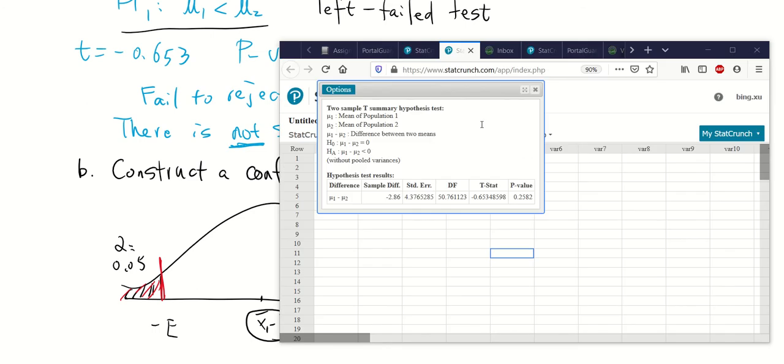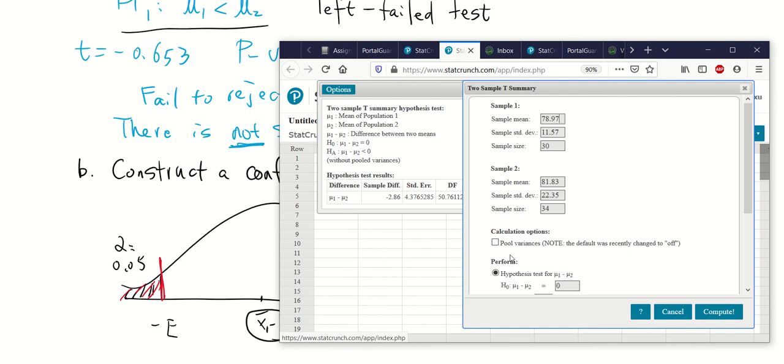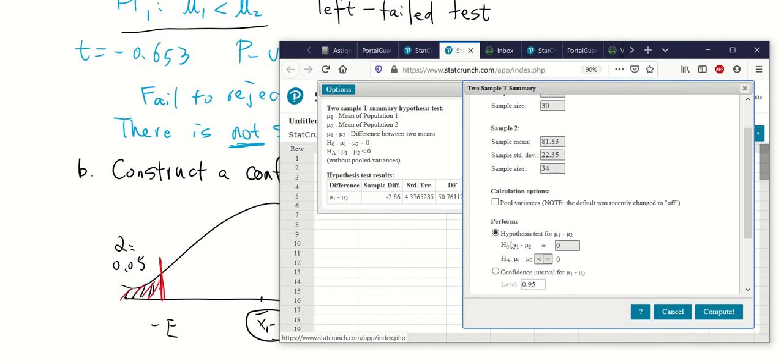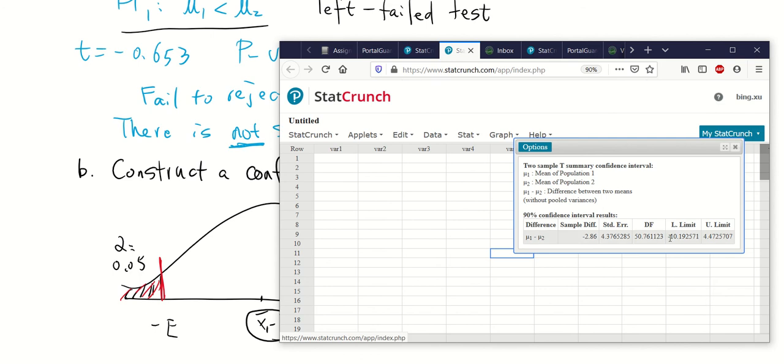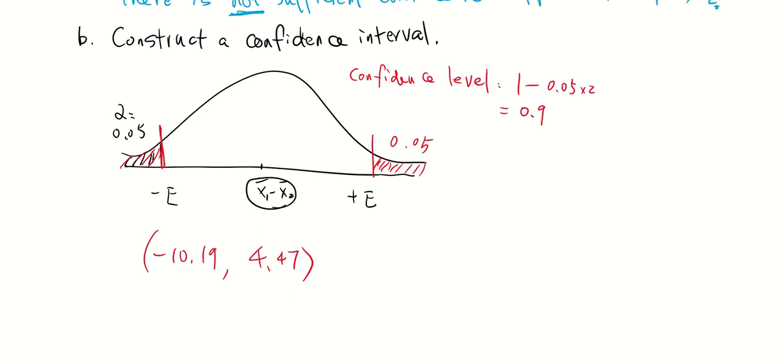So if you go back to your StatCrunch, for the part finding the confidence interval, you don't even have to change the problem. Just go to options, edit, and instead of hypothesis test, choose confidence interval. And the level, confidence level, will be 0.9, and compute. If you have the lower limit and upper limit, if we round it to the nearest hundredth, the confidence interval is negative 10.19 to positive 4.47.